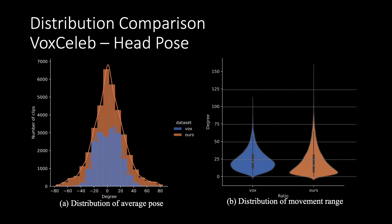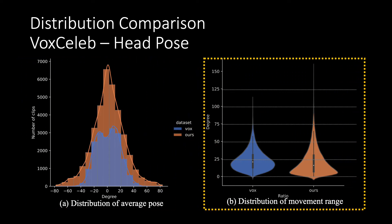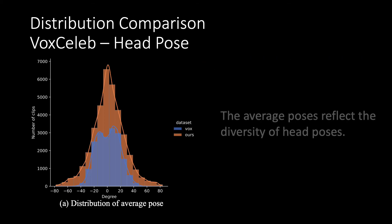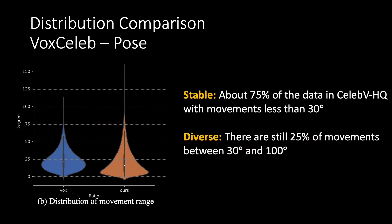The head pose distribution is compared in two aspects: the average head pose of a video and the range of head pose movement. These two are used to show the diversity of head poses across the dataset and within the videos, respectively. CelebVHQ is more diverse and smoother than VoxCeleb in the overall distribution in terms of average head pose. About 75% of the data in CelebVHQ have movements less than 30 degrees, meaning most data are stable, while the overall distribution is still more diverse than VoxCeleb.